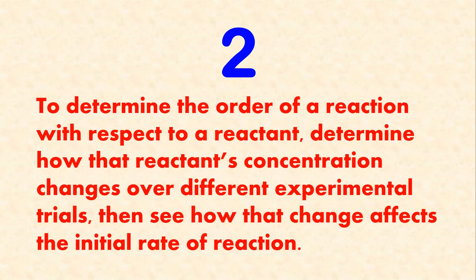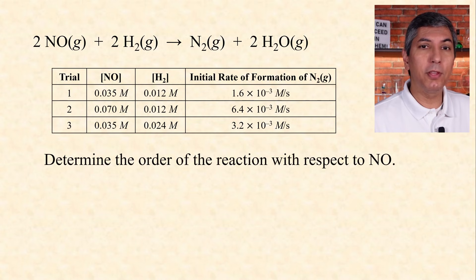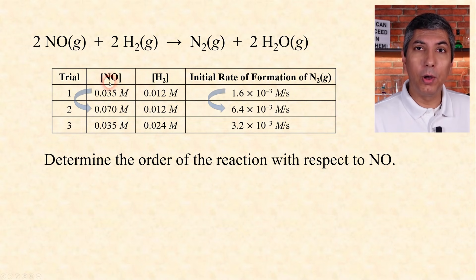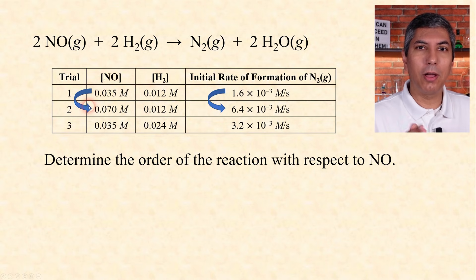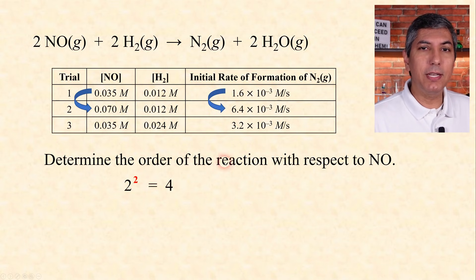Number two: to determine the order of a reaction with respect to a reactant, determine how that reactant's concentration changes over different experimental trials, then see how that change affects the initial rate of reaction. In these problems, you'll see a chemical reaction followed by multiple trials in a table. If the question asks us to determine the order with respect to NO, we find two trials where NO is the only reactant changing — trials 1 and 2, since hydrogen concentration is held constant. The NO concentration doubles from trial 1 to trial 2, and the rate goes up by a factor of 4. The power that makes this a true equality is 2, so NO is second order.